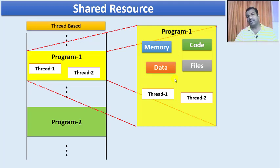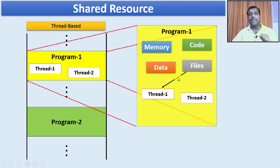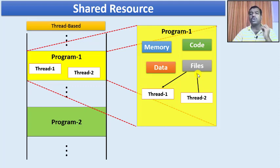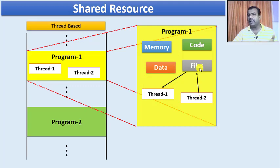All the threads of the same program will share all the resources of a program. Now, just imagine a thread is making use of a file — trying to read, modify, or update it. Right now, thread one has acquired the file to do some operation. At this point, if thread two makes a request to access this same file, nobody will stop it, because the file is shared and thread two is also an owner of this file.